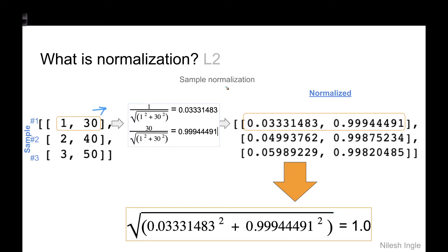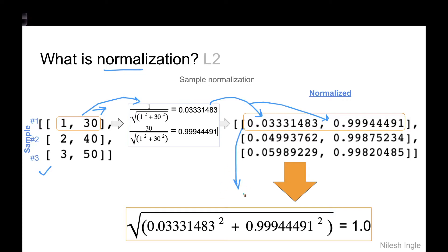Similar to feature normalization, we can also normalize by sample, and most of the time in scikit-learn this is the default. Instead of operating on columns, we take values from a row: square of 1 plus square of 30, square root of that, then use that as the denominator to divide 1 and 30. This gives us values like 0.033 and 0.999, and when we compute the length of that sample vector it equals one — this is again L2 normalization.